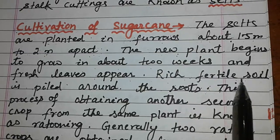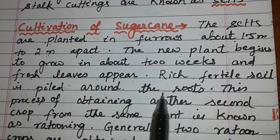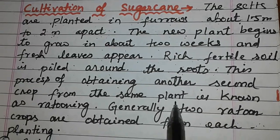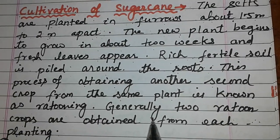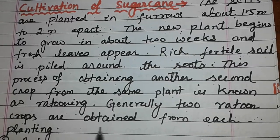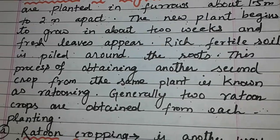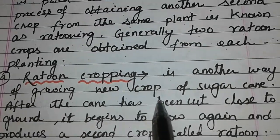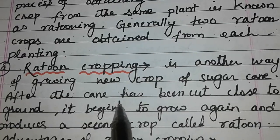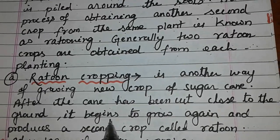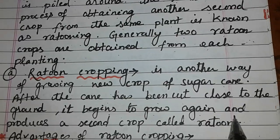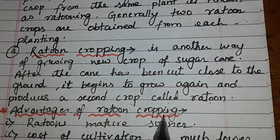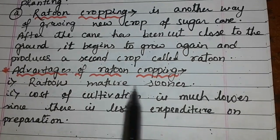Rich fertile soil is piled around the roots. The process of obtaining a second crop from the same plant is known as ratooning. Generally two ratoon crops are obtained from each planting. In ratoon cropping, after the cane has been cut close to the ground, it begins to grow again and produces a second crop called a ratoon.